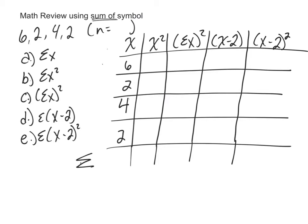Our dataset here is 6, 2, 4, and 2. So our n, our number of people in this sample, our number of scores, is 4.